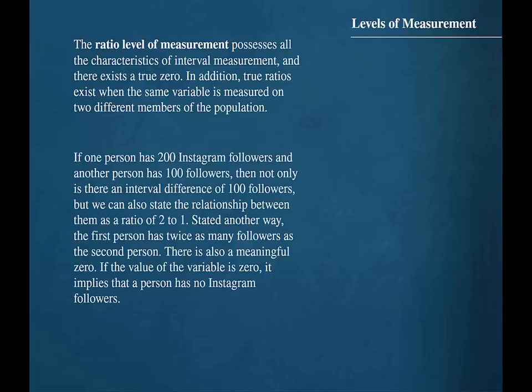If one person has 200 Instagram followers and another person has 100 followers, then not only is there an interval difference of 100 followers, but we can also state the relationship between them as a ratio of 2 to 1. Stated another way, the first person has twice as many followers as the second person. There is also a meaningful zero — if the value of the variable is zero, it implies that a person has no Instagram followers.